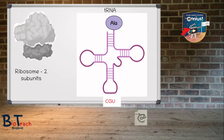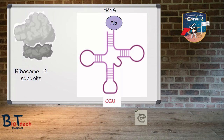The anticodon region is the site of a three-base sequence complementary to the codon on the mRNA molecule, and there is a different tRNA molecule for each of the different possible anticodons. In this diagram, the amino acid alanine is at the top of the long arm of the tRNA molecule. The codon GCA codes for alanine, so the anticodon is CGU. During translation, amino acids are joined together to make a polypeptide chain or protein, following the sequence of codons carried on the mRNA.